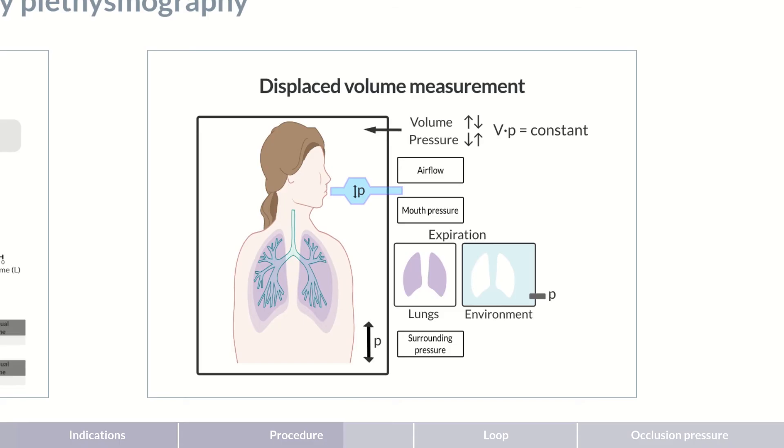Through this interplay, the change in thoracic volume can be derived from the change in cabin pressure. The product of volume and pressure before inspiration must remain constant and therefore equal to the product of volume and pressure after inspiration.